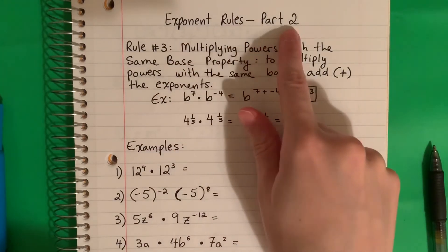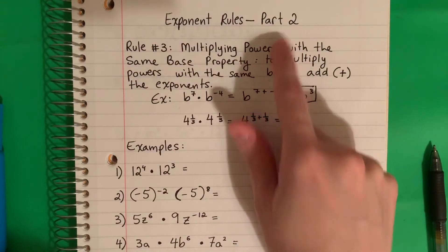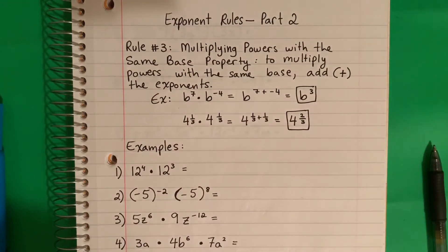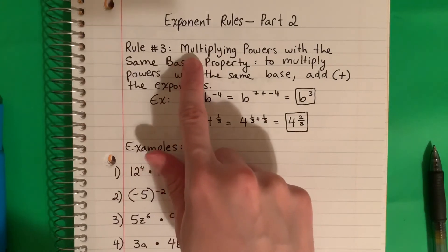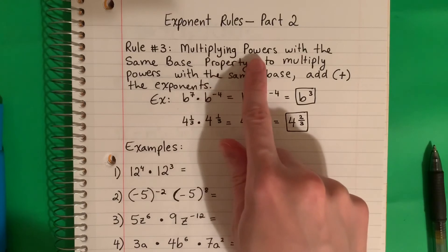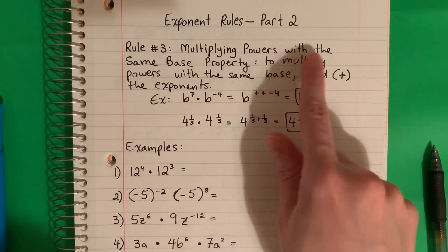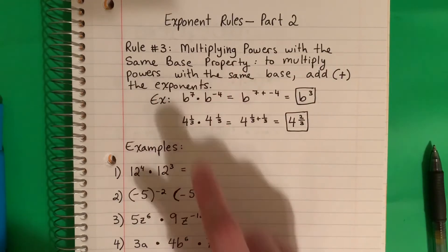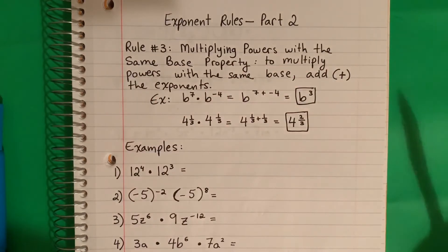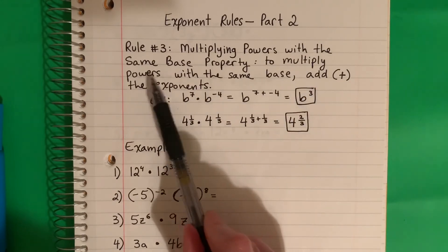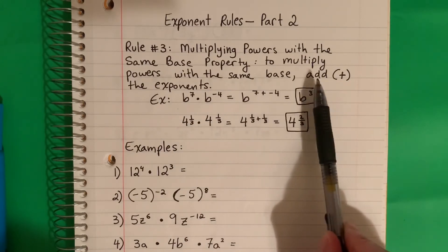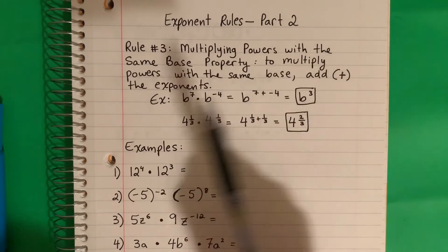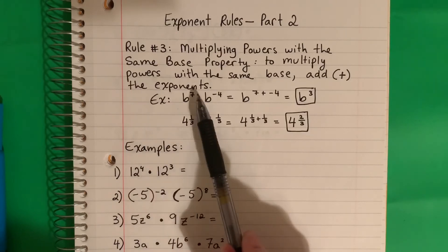Exponent Rules Part 2. We're going to talk about one rule in this video. It's rule number three. The name of the rule is the multiplying powers with the same base property. To multiply powers with the same base, add the exponents.